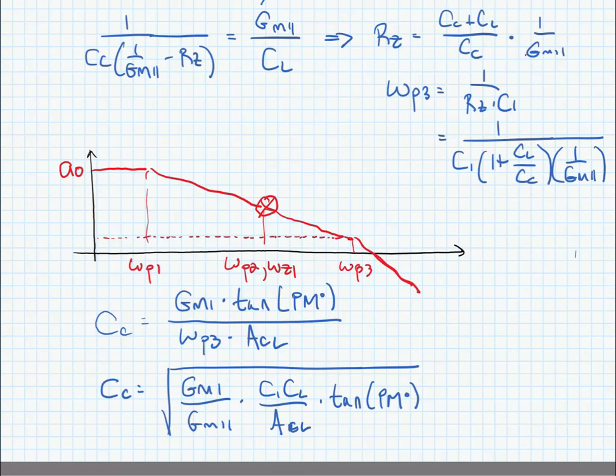If we're making a generic amplifier, we generally design for a closed-loop gain equal to one, assuming that the amplifier may be used as a buffer. This is generally the worst case, but if we're making an application-specific amplifier where we know that the closed-loop gain will never be smaller than a particular value, then we can design for that closed-loop gain.